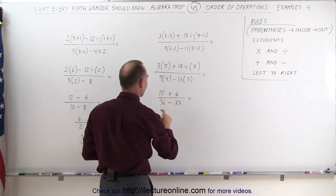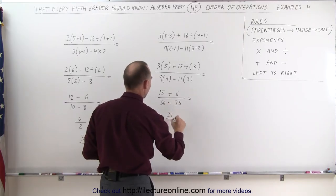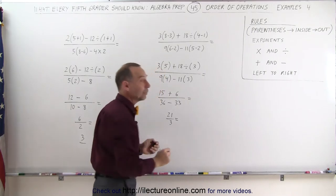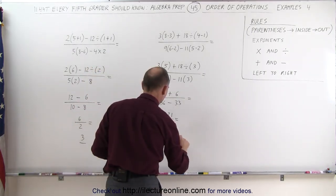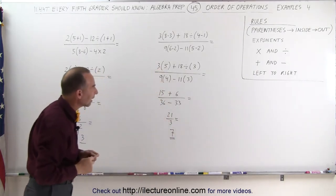Now we add the numerator: 15 plus 6 is 21, divided by 36 minus 33 is 3. And finally, we divide the denominator into the numerator: 21 divided by 3 is 7, and that is the final answer.